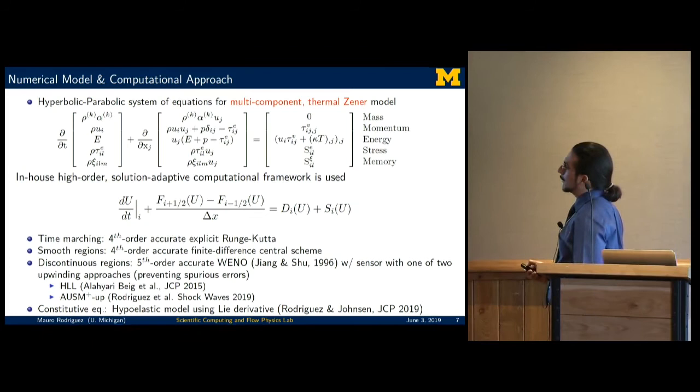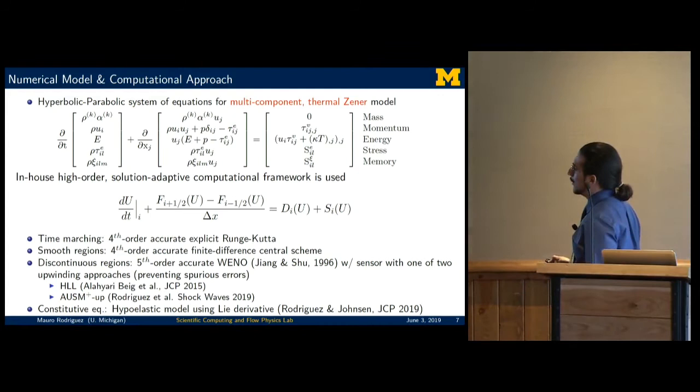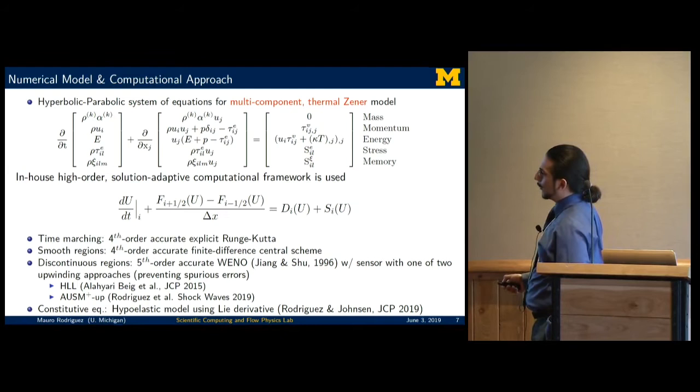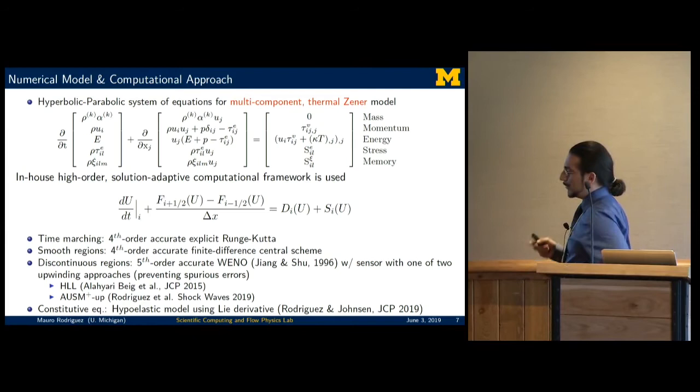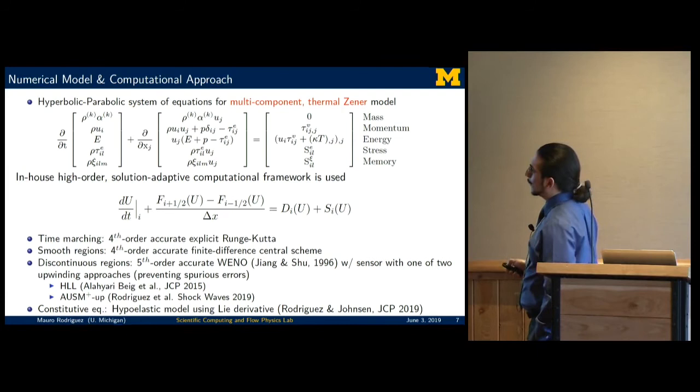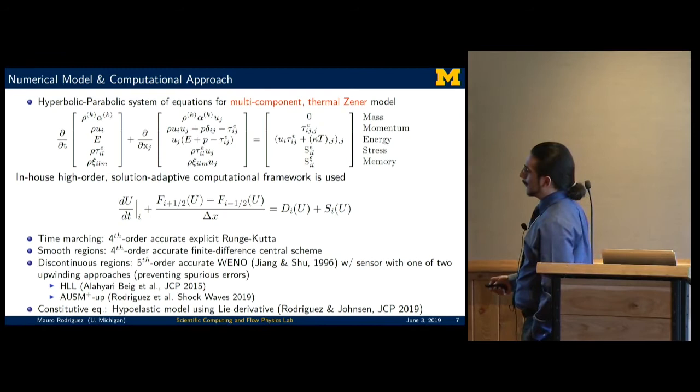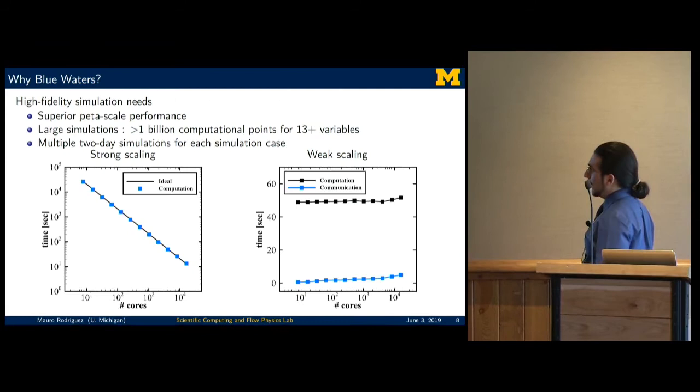The way we go about this is to solve the hyperbolic parabolic system of equations for multi-component thermal Zener model. We're solving the equations for conservation of mass, momentum balance, energy balance, and we need additional evolution equations for the elastic component of the stresses and also the memory variables to account for viscoelasticity. All of this is housed in an in-house high-order solution computational framework where we evolve the equations in space and time. We use high-order accuracy to make sure that we maintain our interfaces as sharp as possible to distinguish between solids, liquids, and gases. This is an entire fully coupled Eulerian framework where we can resolve all the phases or components ranging from gases, liquids, and solids. We incorporate additional work that we've done during our PhDs to resolve the discontinuous regions and solve this problem.